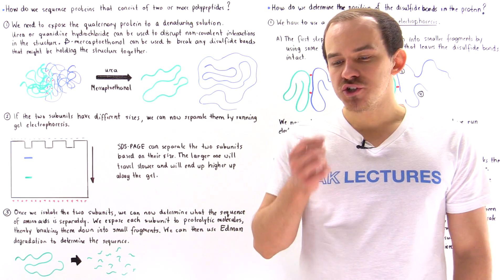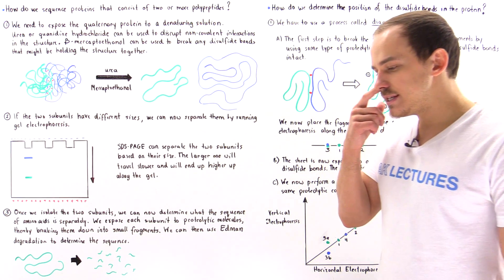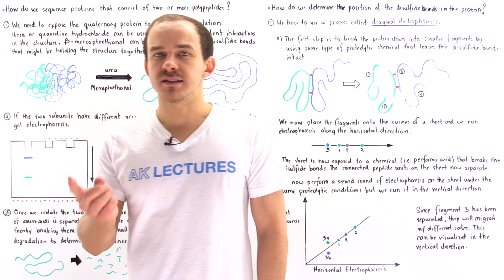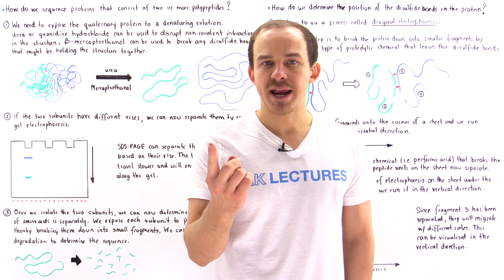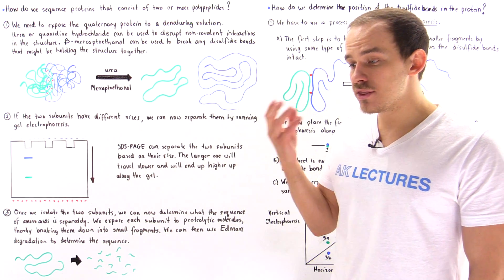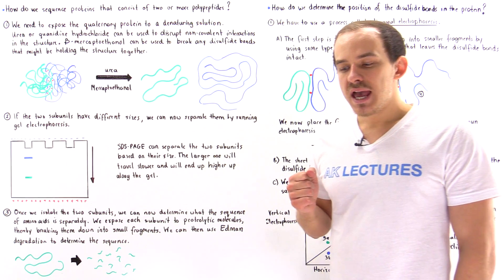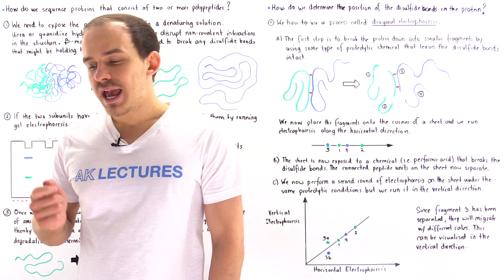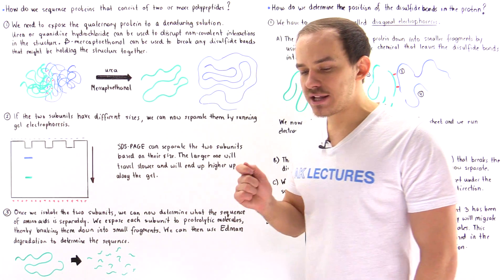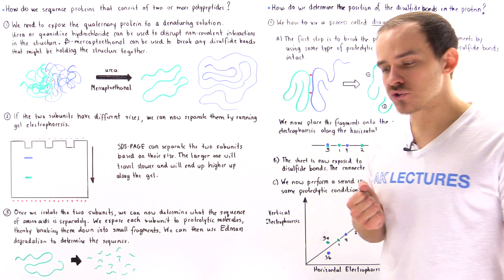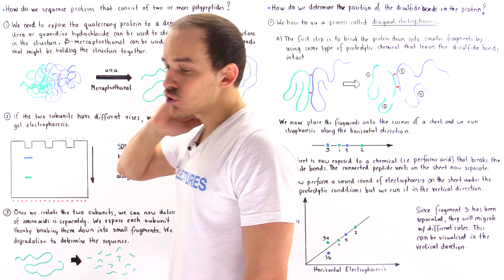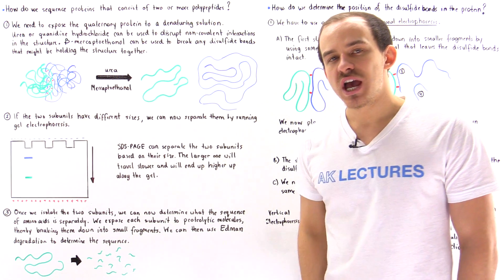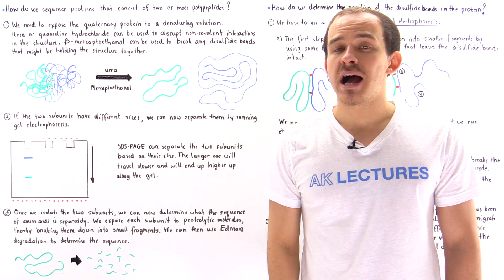In this lecture, we're going to finish our discussion on protein sequencing. Previously, we focused on proteins that consist of a single polypeptide chain, and we discussed how we can sequence the amino acids in those types of proteins. But we know many proteins inside our body, for example hemoglobin, have more than one polypeptide chain, so they have quaternary structure. The question is, if a protein has quaternary structure, if a protein consists of two or more polypeptide chains, how do we sequence these types of proteins?